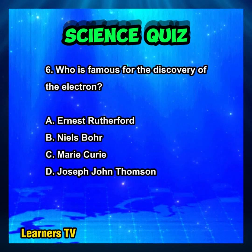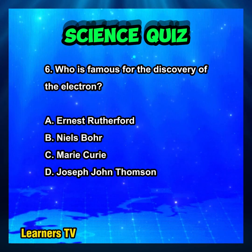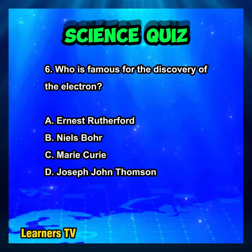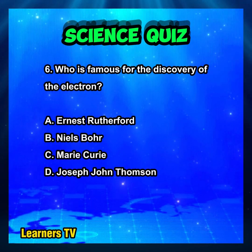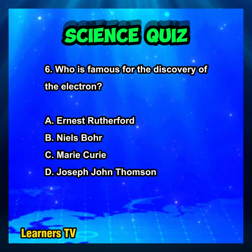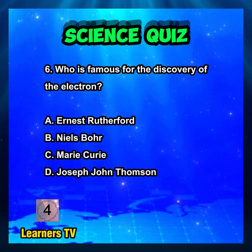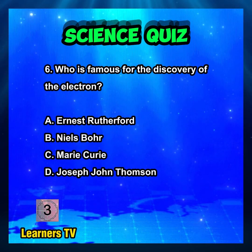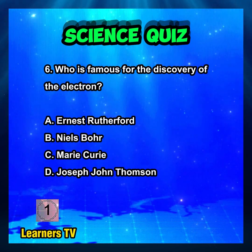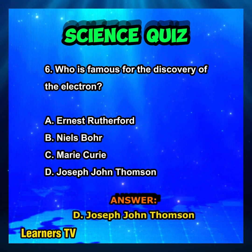Who is famous for the discovery of the electron? A. Ernest Rutherford. B. Niels Bohr. C. Marie Curie. D. Joseph John Thompson. The answer is D. Joseph John Thompson.